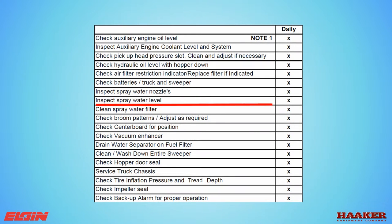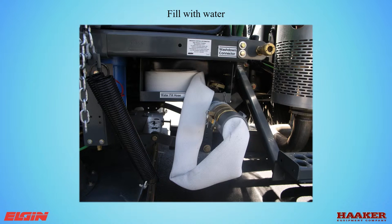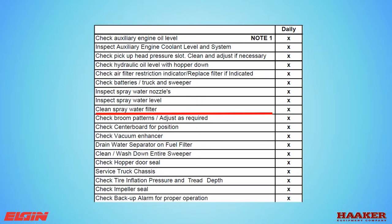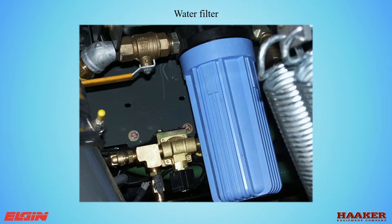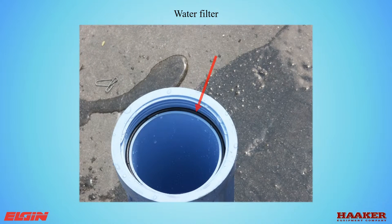Inspect the spray water level and check that you have water to start your day. Fill the water tank as needed with the hydrant hose. To clean the water spray filter, turn off the ball valve, remove the canister, and rinse the filter and housing — don't lose the O-ring. Reinstall with the O-ring in place, then open the ball valve and allow it to overflow to push the air out before tightening. Do not over-tighten or you won't be able to remove it by hand.